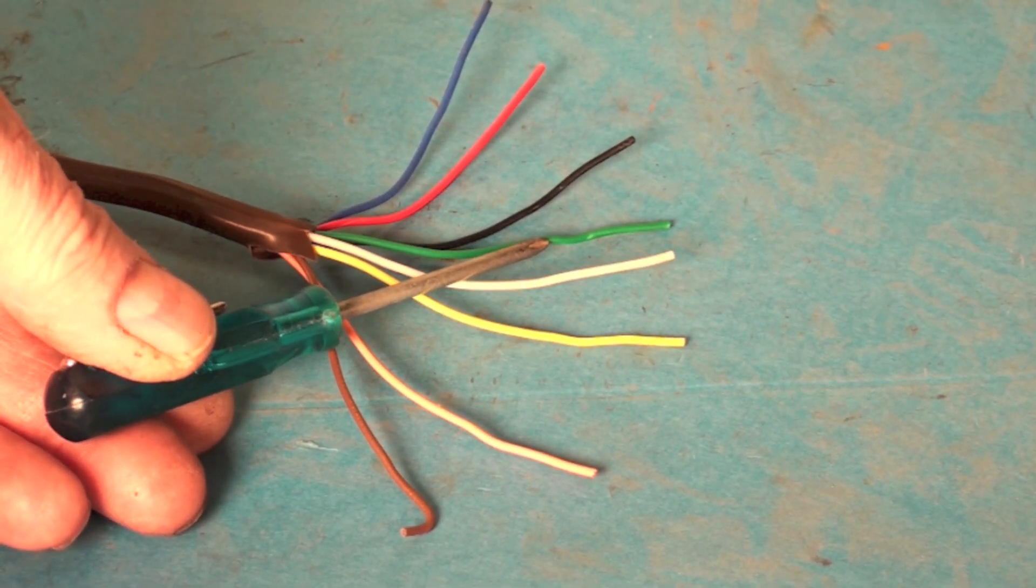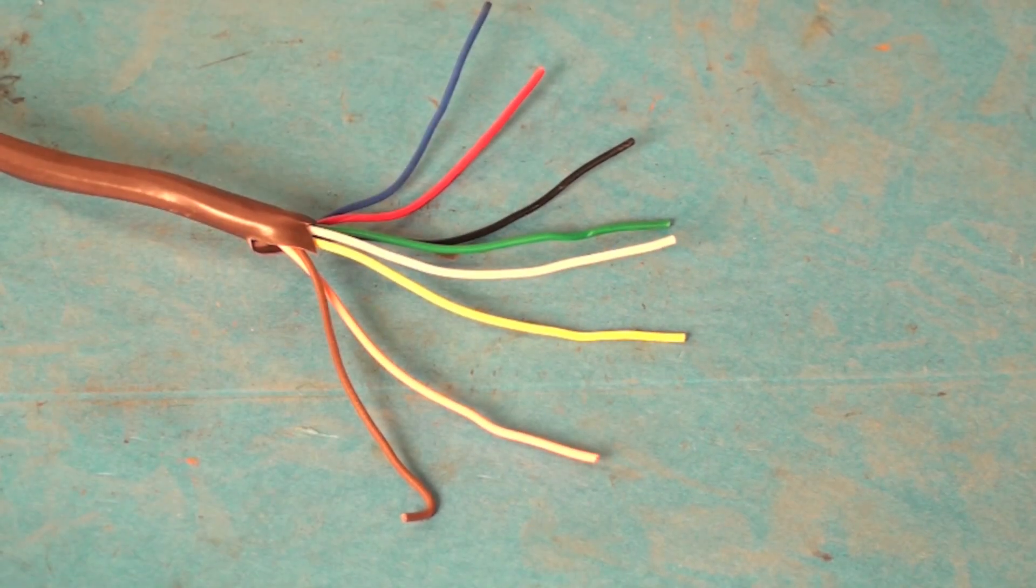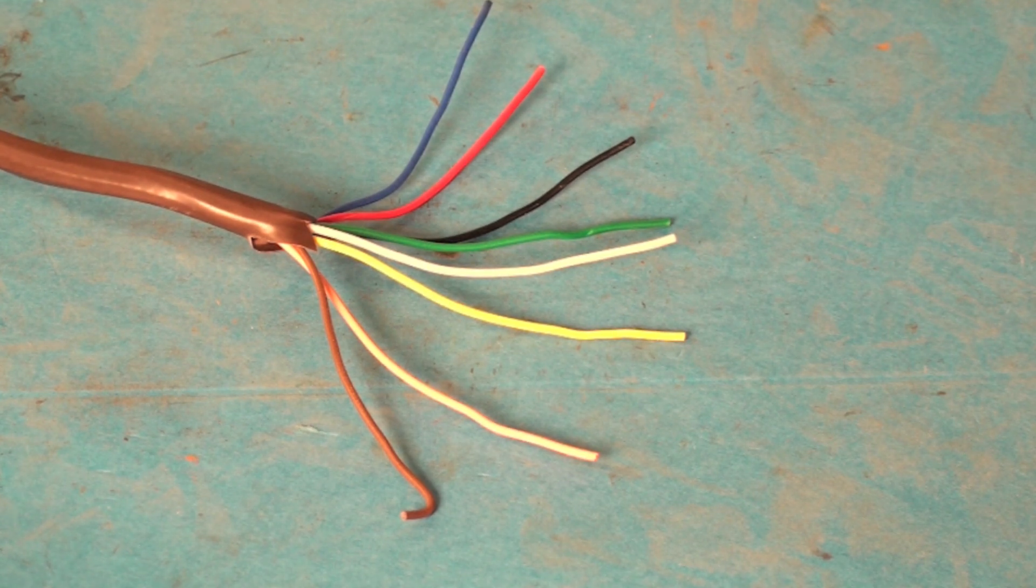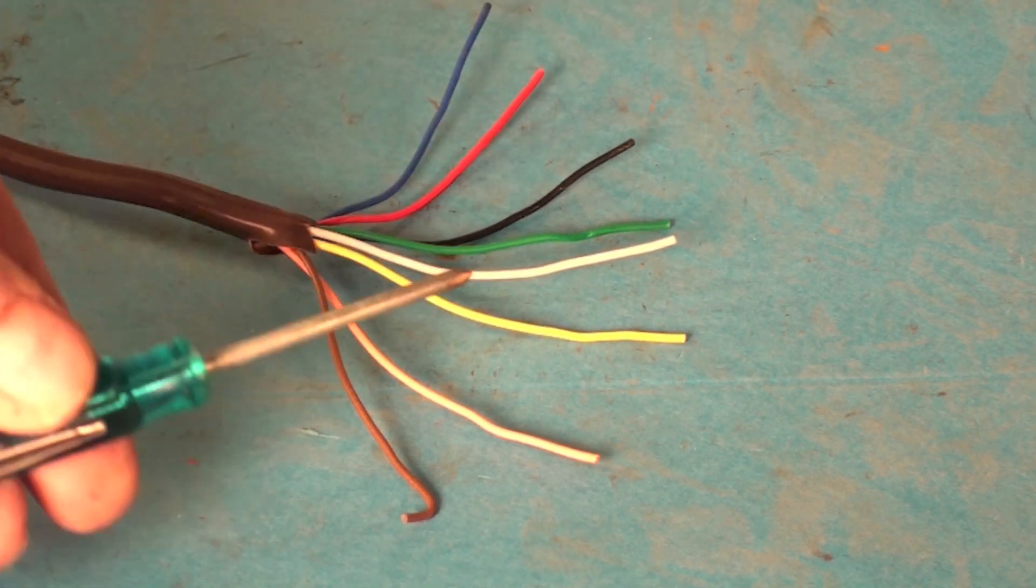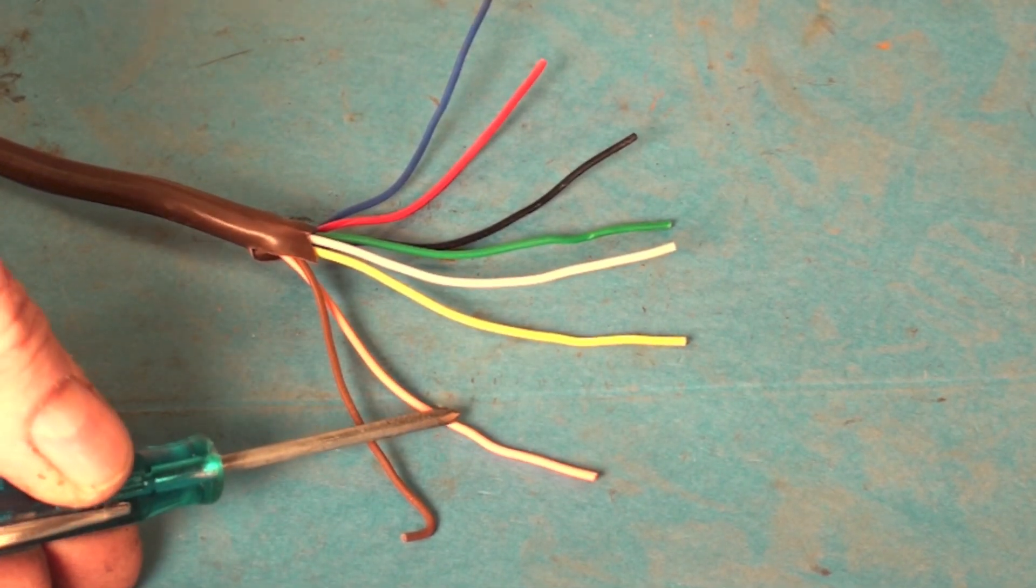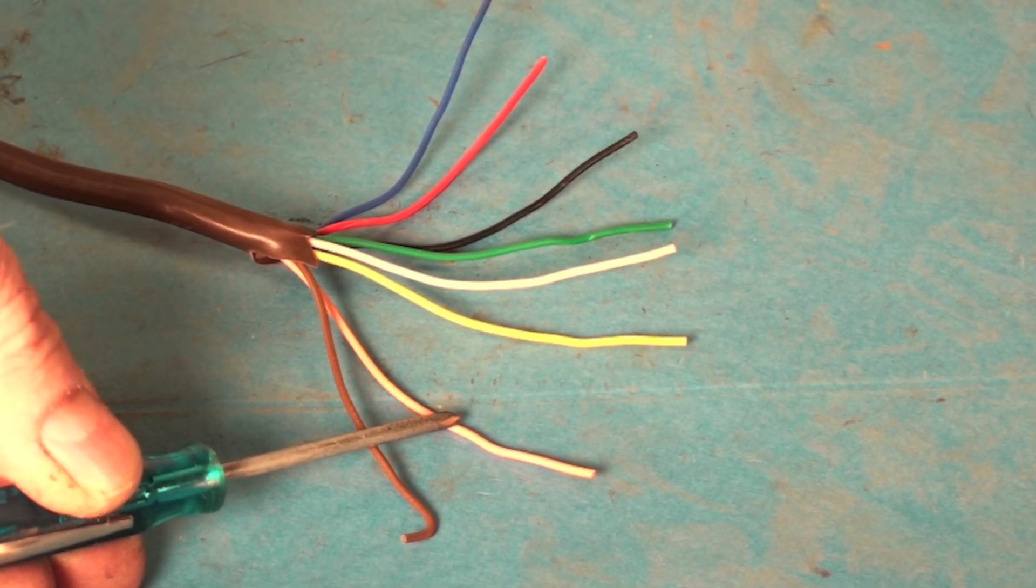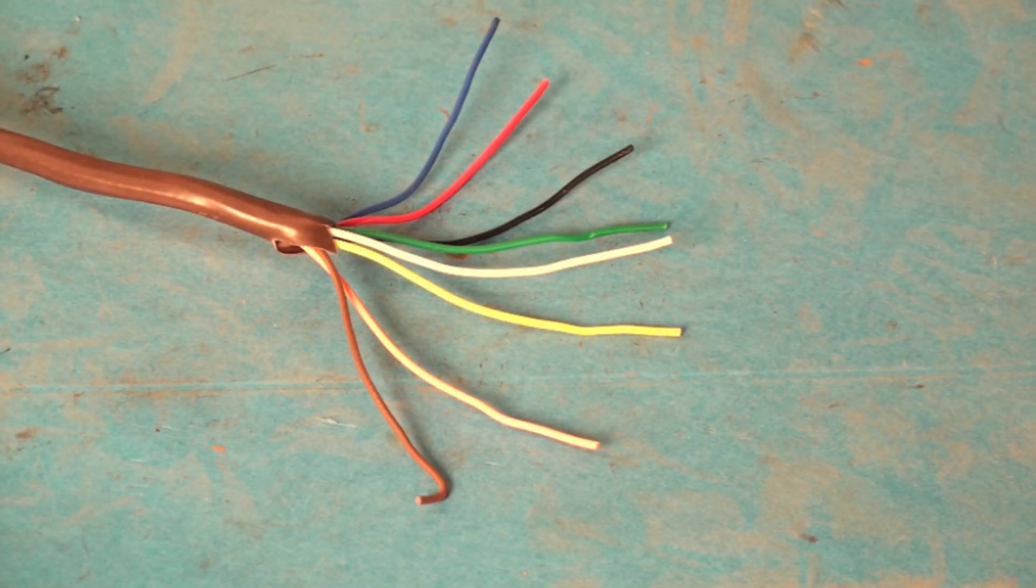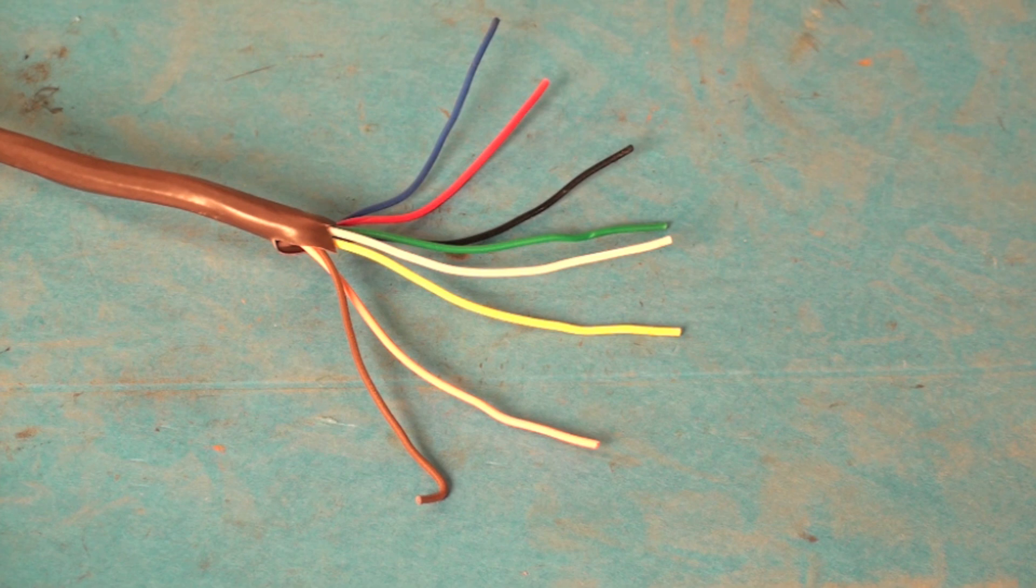Green is for fan. Now we got a couple more wires here. We have an orange right here. That orange is usually used for the reversing valve of the heat pump. We have a blue and we've got an orange.